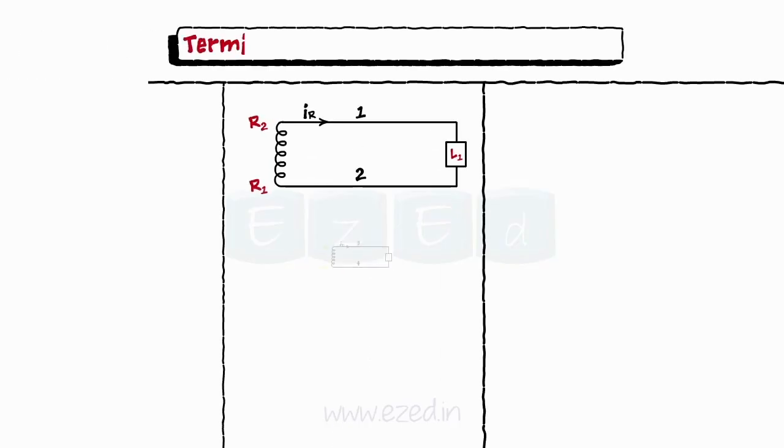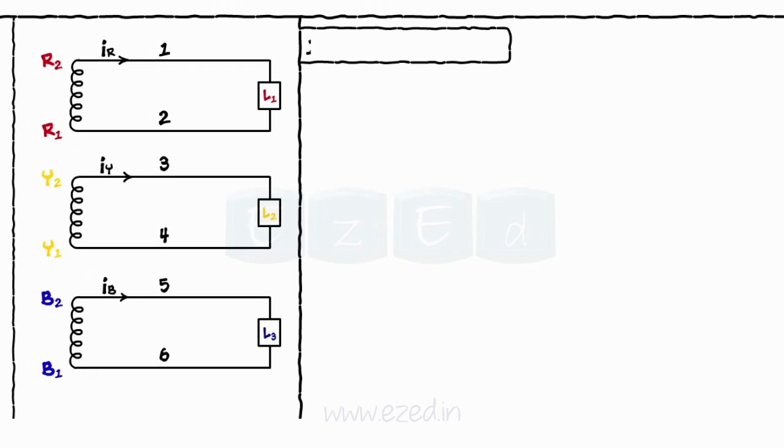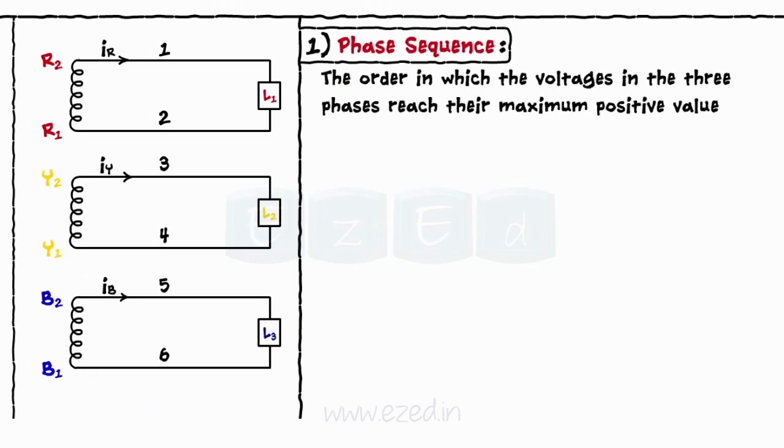Now let's study the terminologies used in three-phase circuits. The order in which the voltages in the three phases reach their maximum positive value is called as the phase sequence.